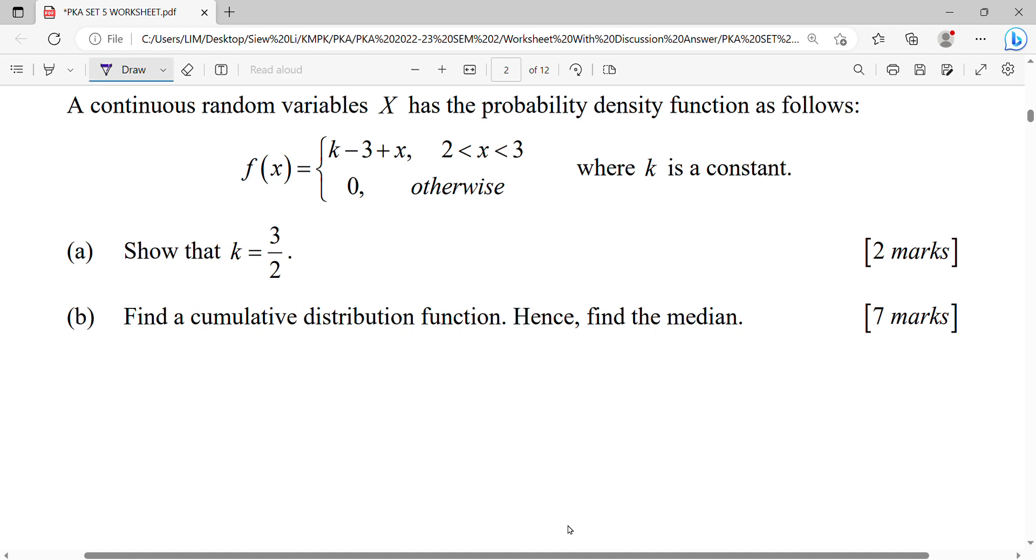A continuous random variable X has the probability density function F kecil. Normally when we're doing probability density function for continuous random variable, we draw out our interval. So what's your interval involving function here? It will be 2 until 3.